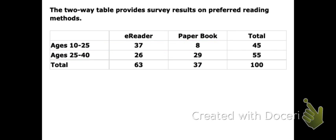Let's look at it in total. How many total people did they survey? 100 — that's the total. How many total people prefer paper books? 37. How many of those surveyed are between the ages of 25 and 40? 55. How many people between the ages of 10 and 25 prefer to read a paper book? Ages 10 to 25 is this row, paper book is right here — that would be 8 people.